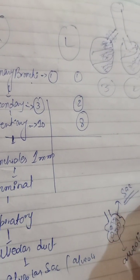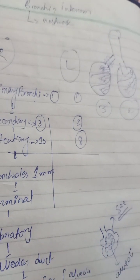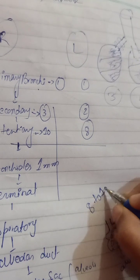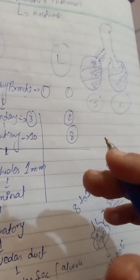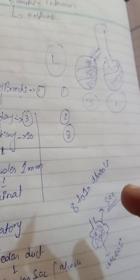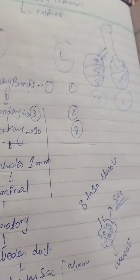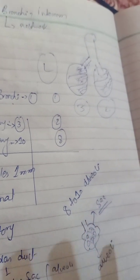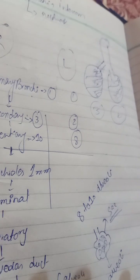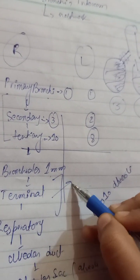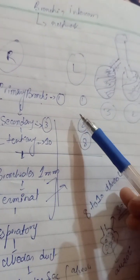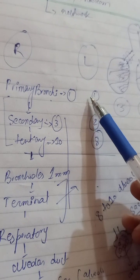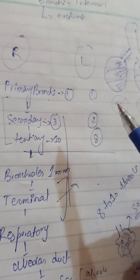A single alveolar sac contains eight to ten alveoli. Since there are millions of alveolar sacs, you can imagine how many alveoli there are in total. To recap: primary, secondary, and tertiary bronchi have cartilages, while bronchioles and beyond do not — that is the key difference in this network.